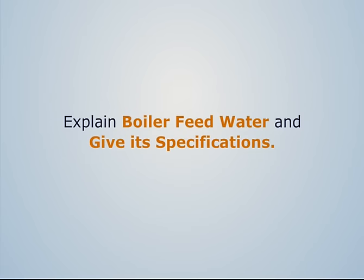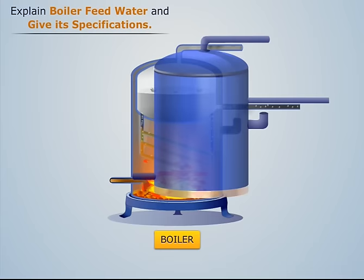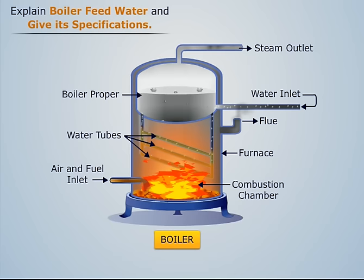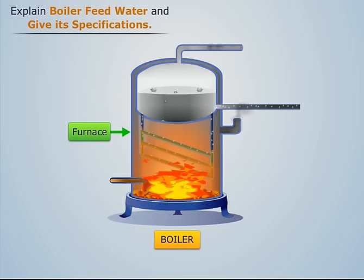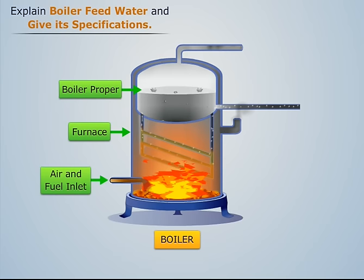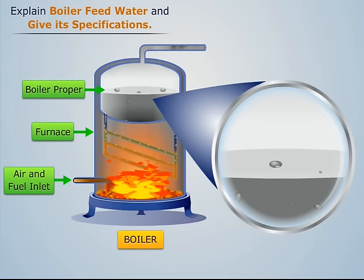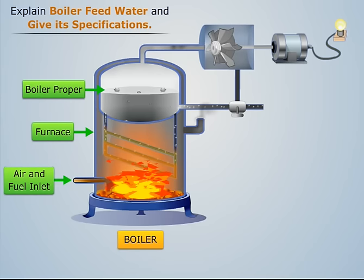Generally, boilers are used in industries to generate steam, which in turn is used to generate power and heat. A boiler is a device for generating steam. It consists of two main parts: the furnace and the boiler proper. The furnace provides heat by burning the fuel, and the boiler proper is a device where water changes into steam due to heat. This steam or hot fluid is then recirculated out of the boiler to be used in various processes.